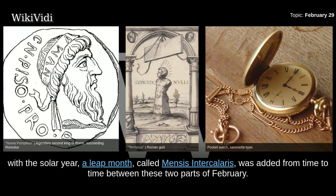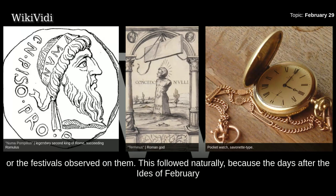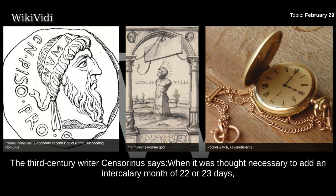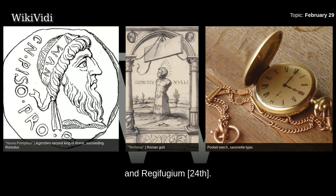To keep the calendar year roughly aligned with the solar year, a leap month called menses intercalaris was added from time to time between these two parts of February. The second part of February was incorporated in the intercalary month as its last five days, with no change either in their dates or the festivals observed on them. The 3rd-century writer Censorinus says when it was thought necessary to add an intercalary month of 22 or 23 days, so that the civil year should correspond to the natural year, this intercalation was in preference made in February, between Terminalia on the 23rd and Regifugium on the 24th.